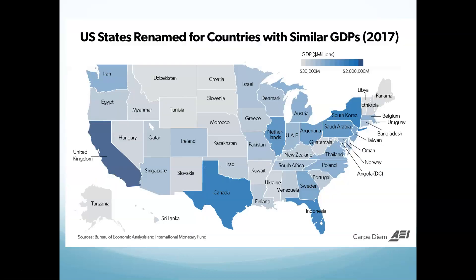This map shows each country's GDP equivalent to a US state. Texas has a GDP equivalent to about all of Canada — the state of Texas produces goods and services valued about the same as everything produced in Canada in a given year. California produces as much as the United Kingdom. Florida produces as much as Indonesia. Another way of looking at this: the United States produces as much as 50 different countries combined, which means we have a big honking GDP — which we do.